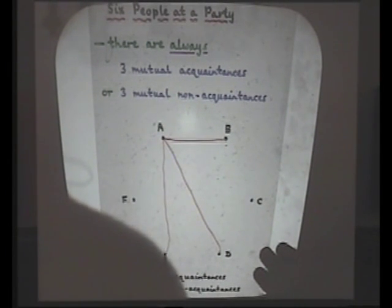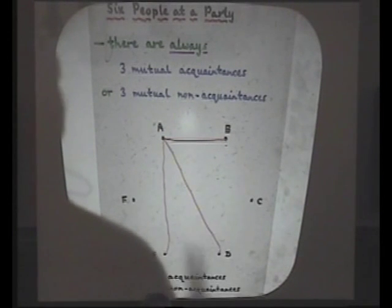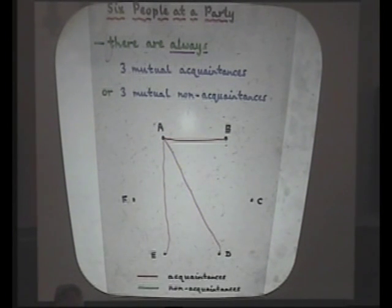And it doesn't matter where they go. Now, A to C and A to F, they may be red, they may be green. We don't know. But we do know they're at least three of the same color, so we have this.